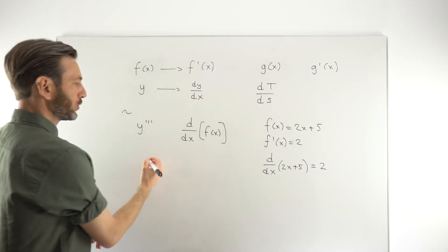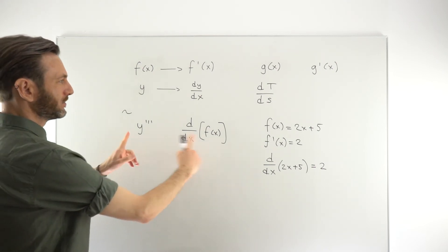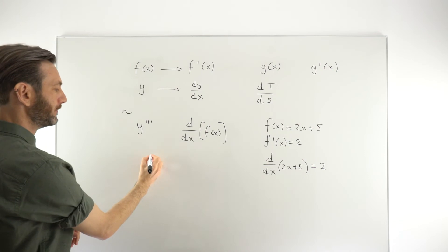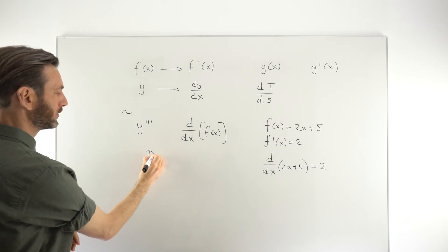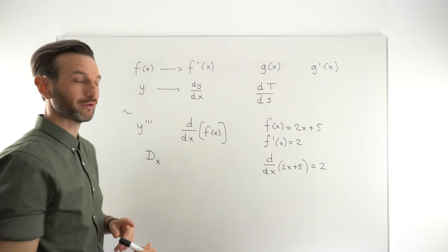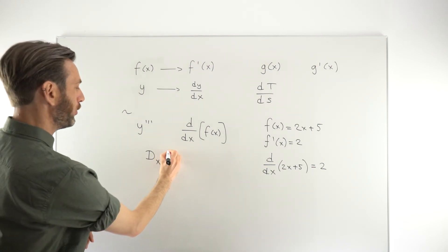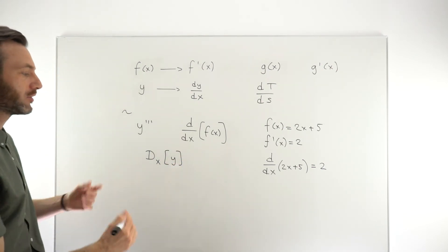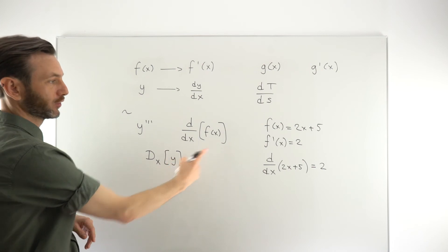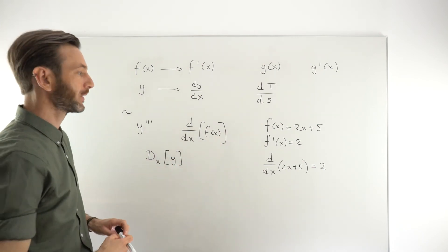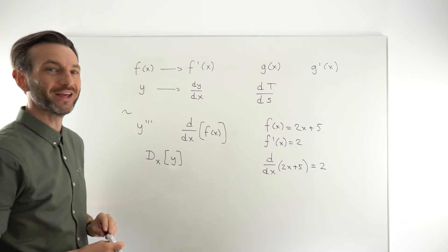There are a couple of other options for the derivative. These tend to be the main ways that you'll see it represented. You might sometimes see a capital D with a little x. So that again means derivative with respect to x of maybe some function in here. So derivative with respect to x of y in general, but this could actually be some function like 2x plus 5 in here as well. So these are all the variations on the notation.